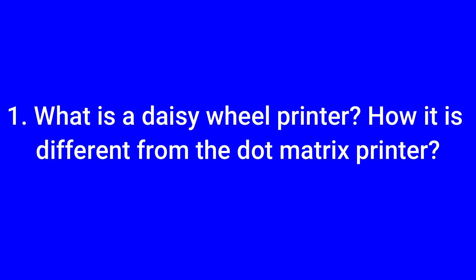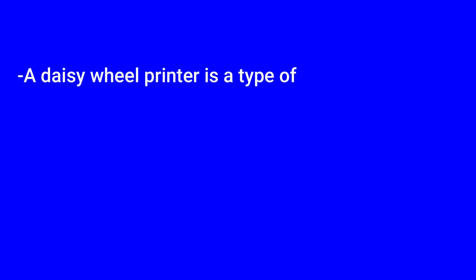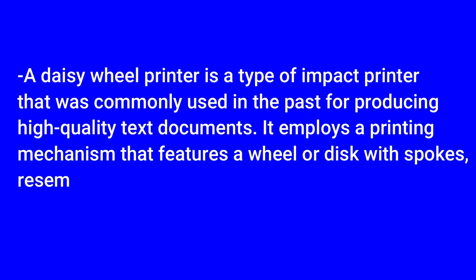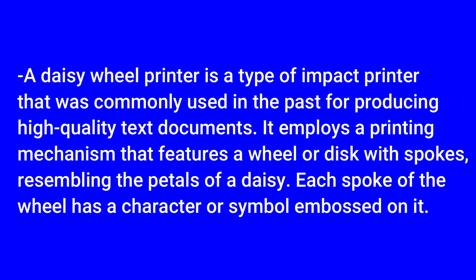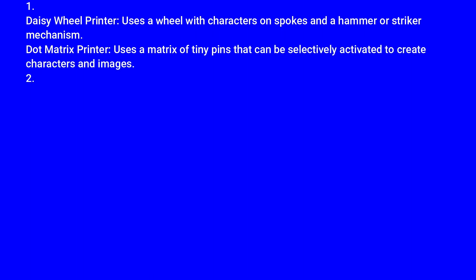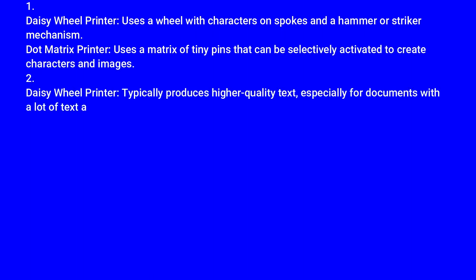First question: what is a daisy wheel printer and how is it different from a dot matrix printer? A daisy wheel printer is a type of impact printer commonly used in the past for producing high-quality text documents. It employs a printing mechanism featuring a wheel or disc with spokes resembling the petals of a daisy, each spoke having a character or symbol embossed on it.